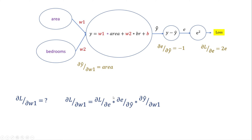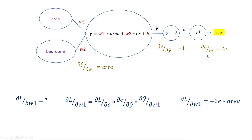To get ∂Loss/∂w1, you simply multiply all the individual partial derivatives together. The intermediate terms — de and de, dy-hat and dy-hat — cancel out, leaving dL/dw1, which makes mathematical sense. You are chaining the partial derivatives step by step and multiplying them. The final result is: ∂Loss/∂w1 = −2e × area. This product of chained partial derivatives is exactly what's called the chain rule.